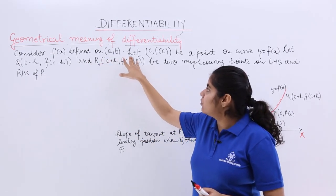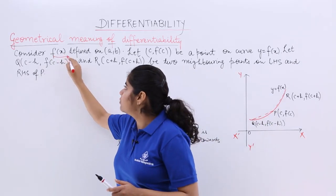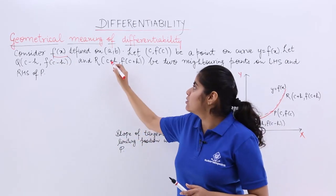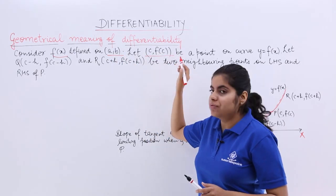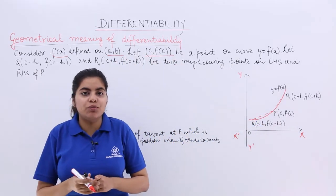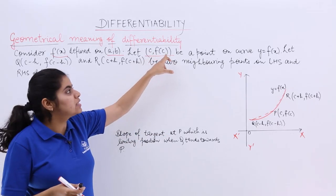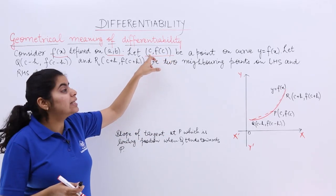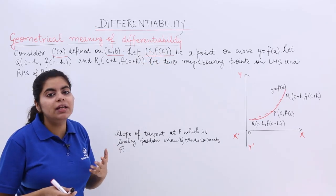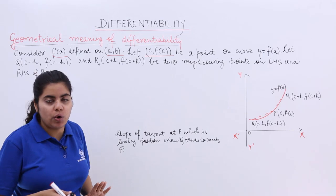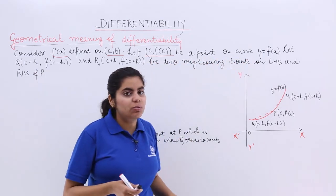Consider f(x) defined on (a, b). This tells me that I have a function named f(x) defined on the open interval (a, b). Let c, f(c) — this is a part of coordinate geometry. c is the x-coordinate, f(c) is the y-coordinate. Or I say that c is the abscissa of the ordered pair, and f(c) is the ordinate or y-coordinate of the ordered pair. This is the point on the curve y = f(x).